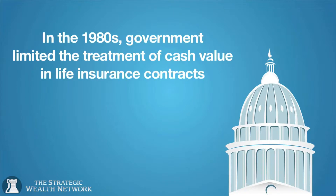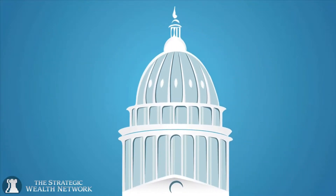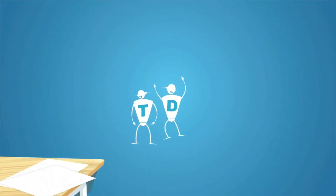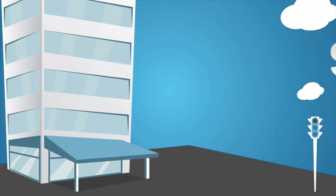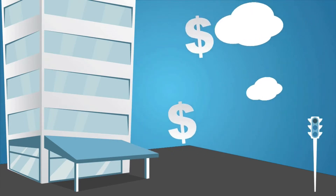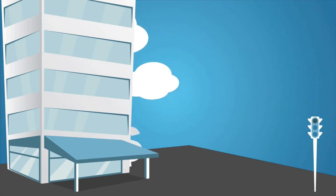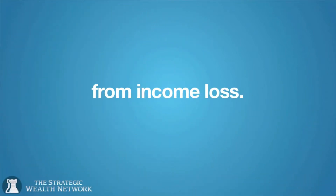Why is this? Back in the 1980s, the government limited the tax-favored treatment of cash value in life insurance contracts. With the revelation of how many people were avoiding taxation utilizing these contracts, Congress passed two laws — TAMRA and DEFRA — also known as the terrible twins. These two laws were in direct response to an overwhelming amount of cash being injected into single premium and universal life contracts during the late 70s. These contracts were being used as tax shelters instead of their intended use: protecting assets and beneficiaries from income loss.